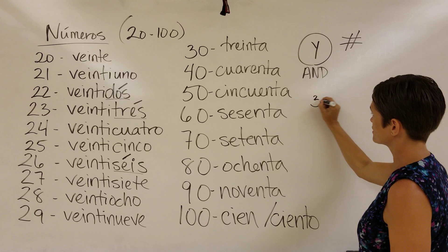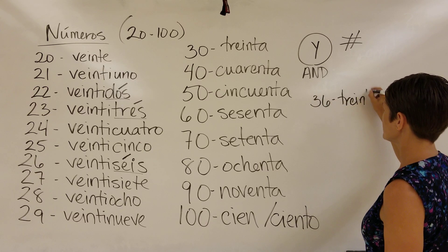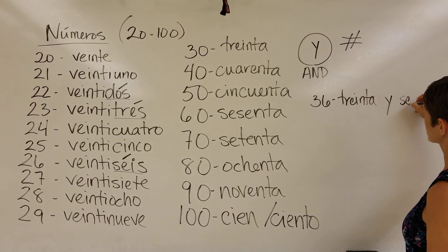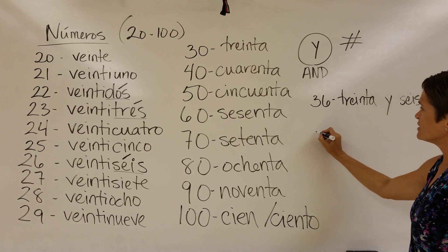So let's say I wanted to write 36. I would start with the word 30, which is treinta. Then I would use the word 'y', and then the number six, which is seis. And that would be no accents required.